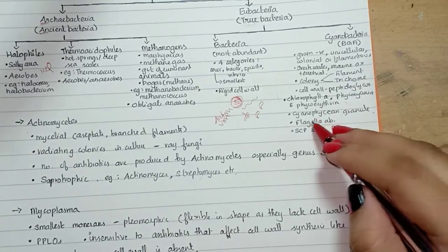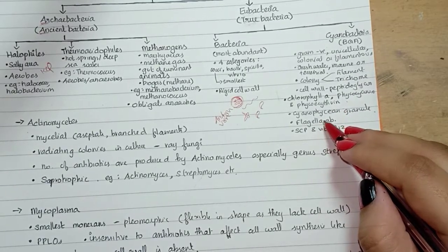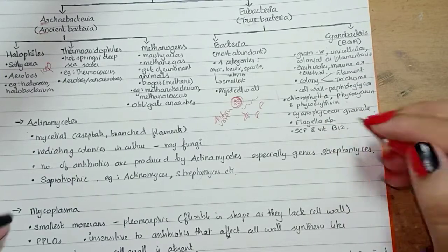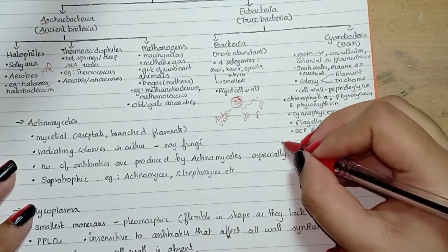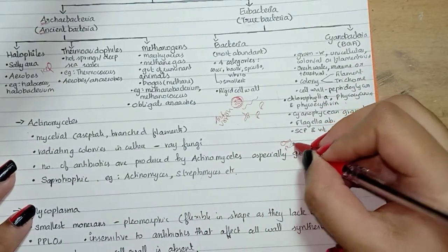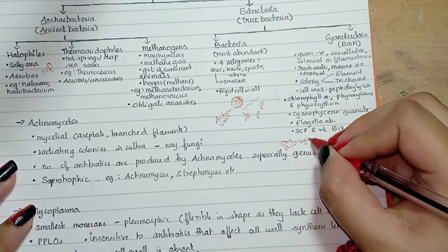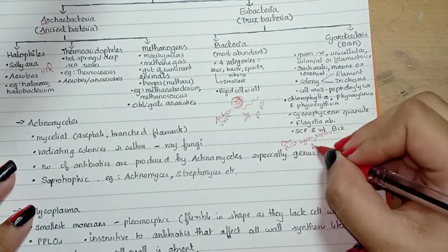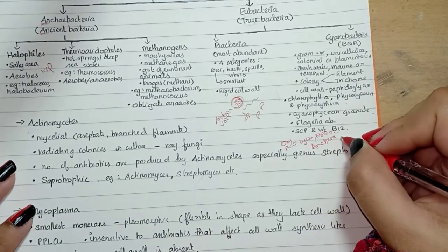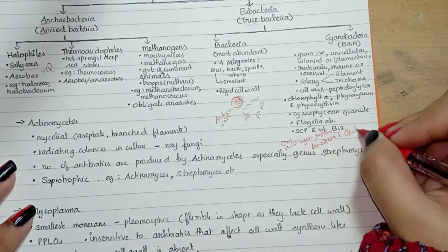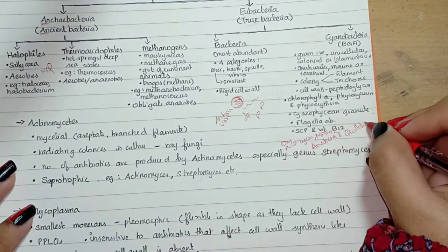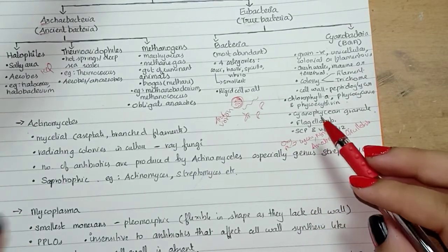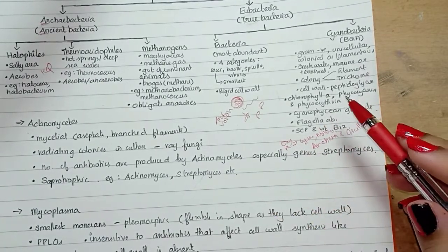The cyanobacteria Nostoc, Anabaena, and Oscillatoria perform oxygenic photosynthesis.